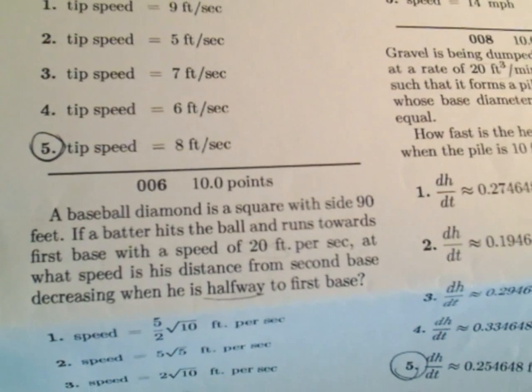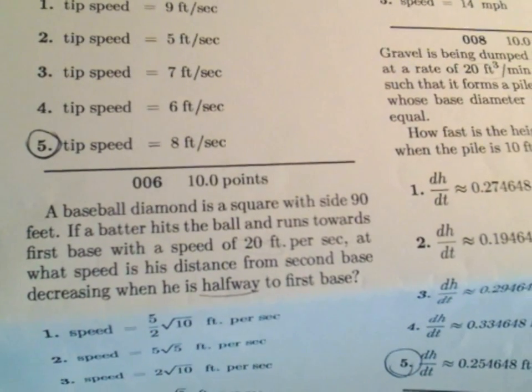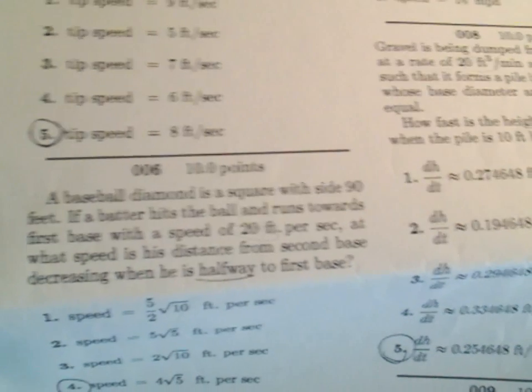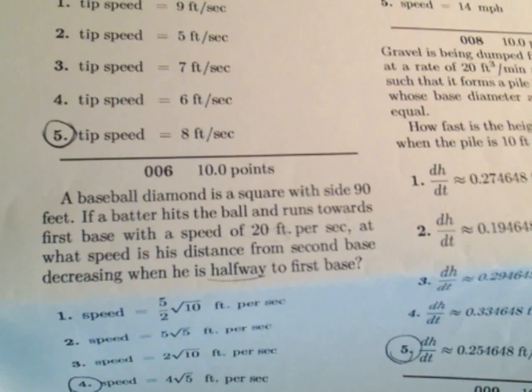Okay, in number six, it says a baseball diamond is a square with a side 90 feet. It says if a batter hits the ball and runs towards first base with a speed of 20 feet per second, at what speed is his distance from second base decreasing when he's halfway to first base?